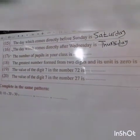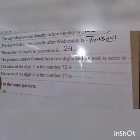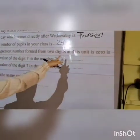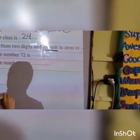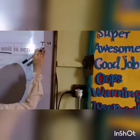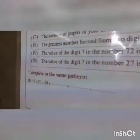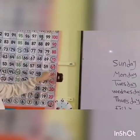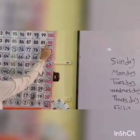Number seventeen: the number of students in the Europa class is twenty-four. Number eighteen: the greatest number formed from two digits whose unit digit is zero. We have two digits — units and tens — and in the units we have zero. Looking at the chart, the greatest two-digit number with units digit zero is ninety. Good job — ninety!